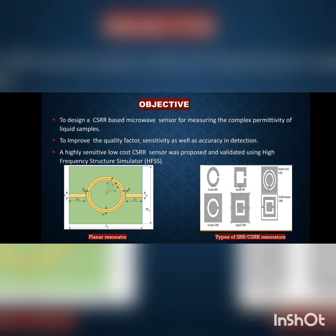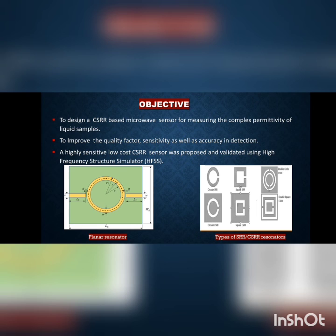We are going to design a CSR-based sensor. First, what is an SRR? SRR is a Split Ring Resonator — a ring resonator with a split in between. A square SRR uses a square ring with a split. A double-circle CSR uses two ring resonators with splits. CSR stands for Complementary Split Ring Resonator, which is the metallic negative image of an SRR — we etch out the copper layer on a substrate board to get the CSR.